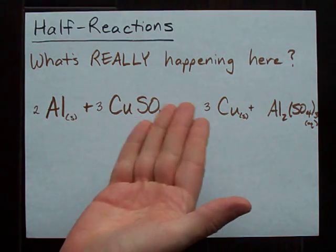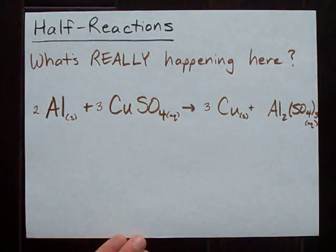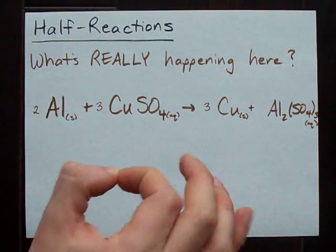We can explain how this happens using electrochemistry and the first way that I want to explain it involves using the oxidation numbers to see what's happening to each atom individually.